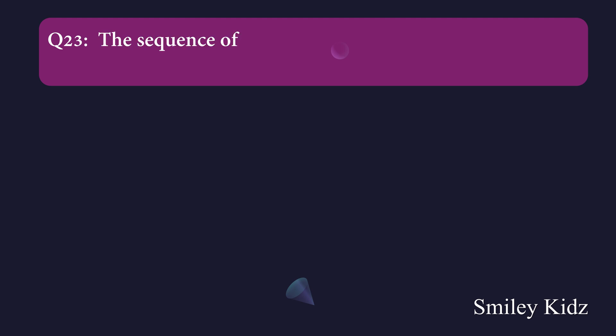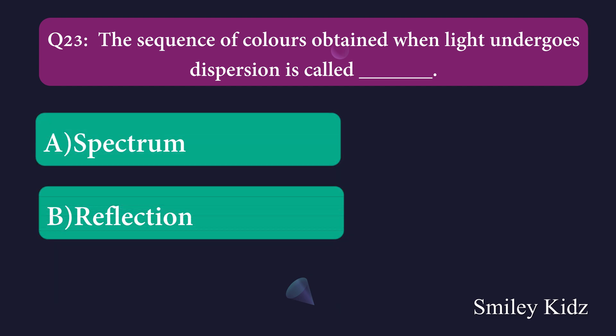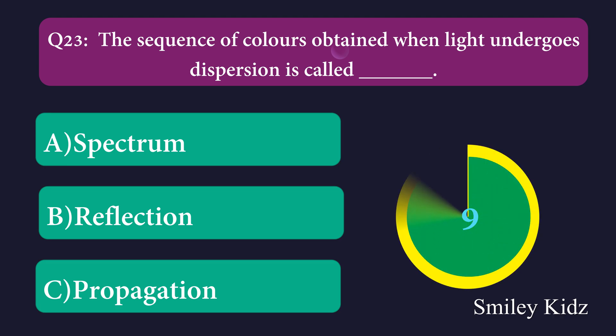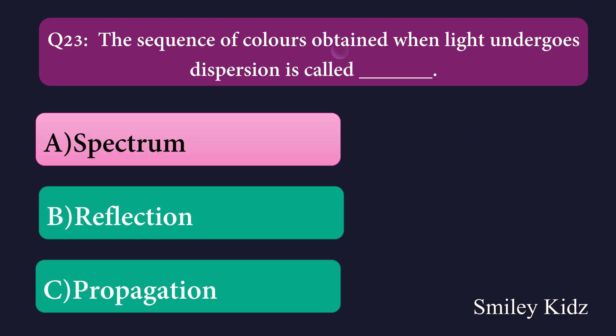Question number twenty-three: The sequence of colors obtained when light undergoes dispersion is called dash. Option A: spectrum, Option B: reflection, Option C: propagation. The right answer is spectrum. The sequence of colors obtained when light undergoes dispersion is called spectrum.